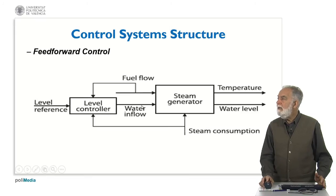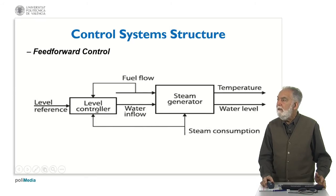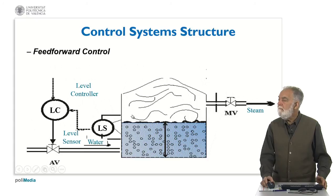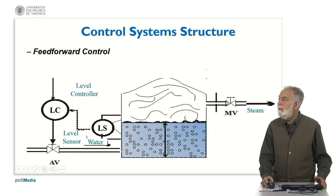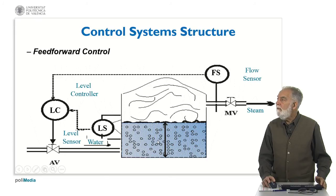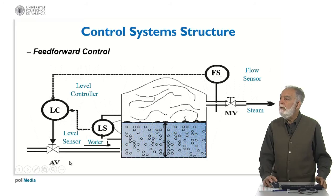You can see here an example. The level can be controlled by the level controller, but if we know that there is an extra consumption of steam, then we can modify the inflow. This is seen in the picture: more water will be drawn, and before we measure the level dropping, we can increase the water flow. So we can add a flow sensor here and generate an extra input to the controller.